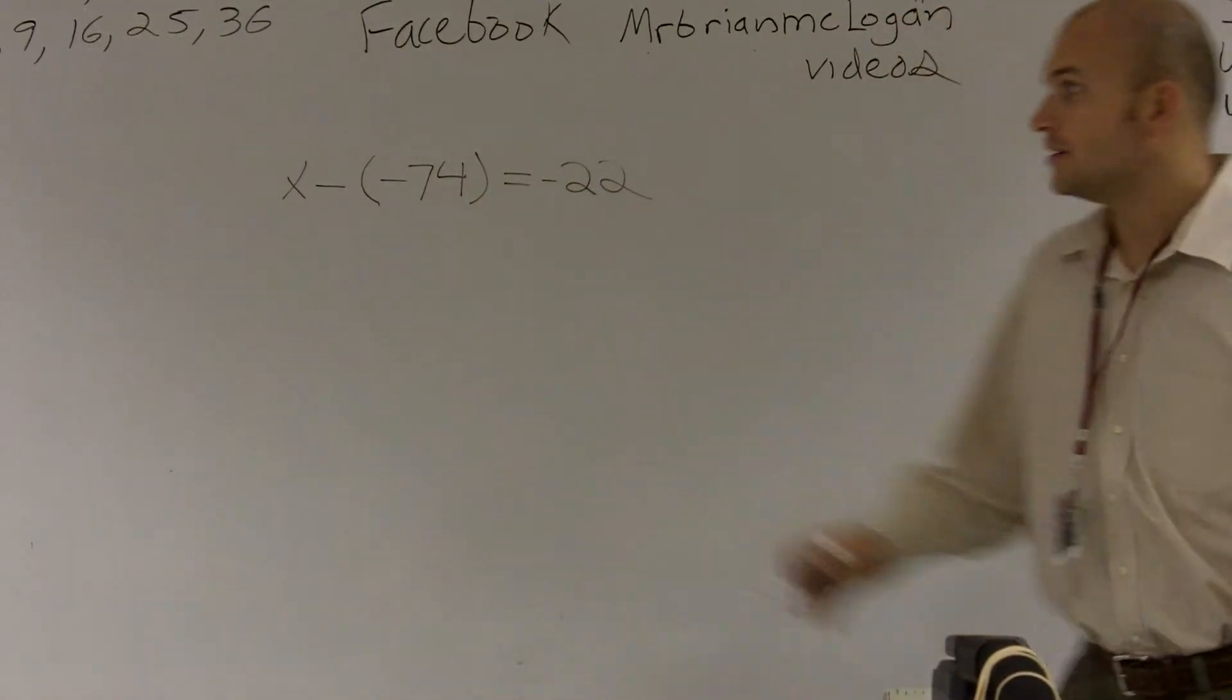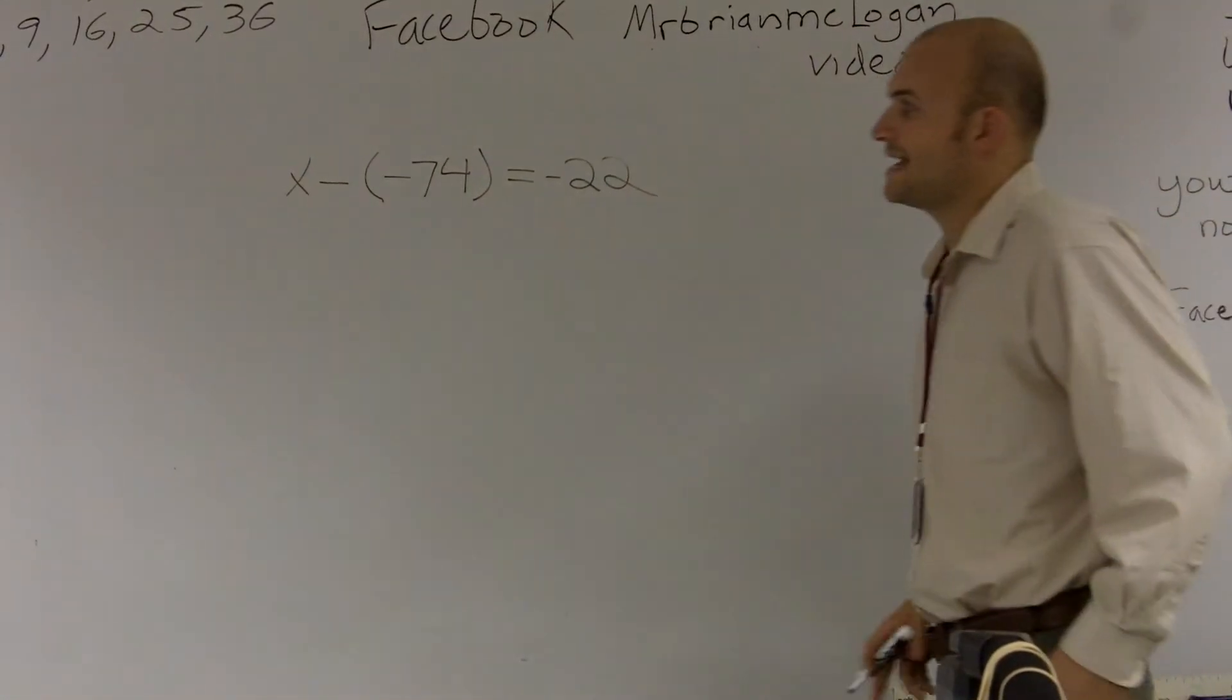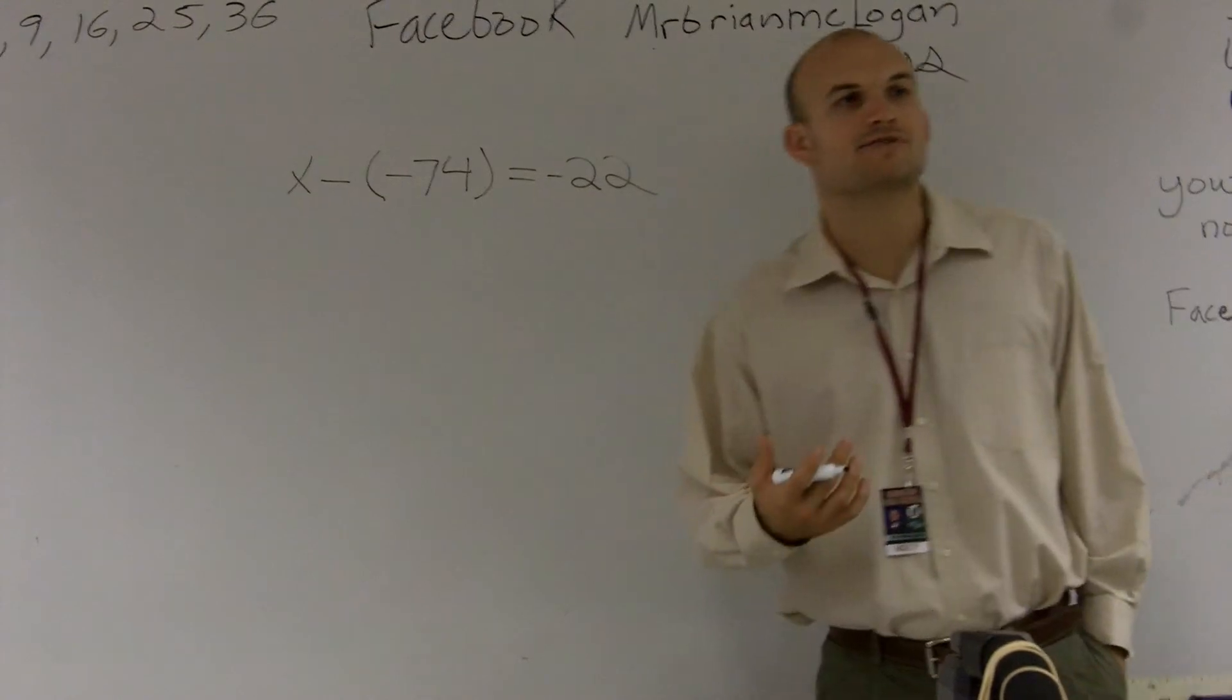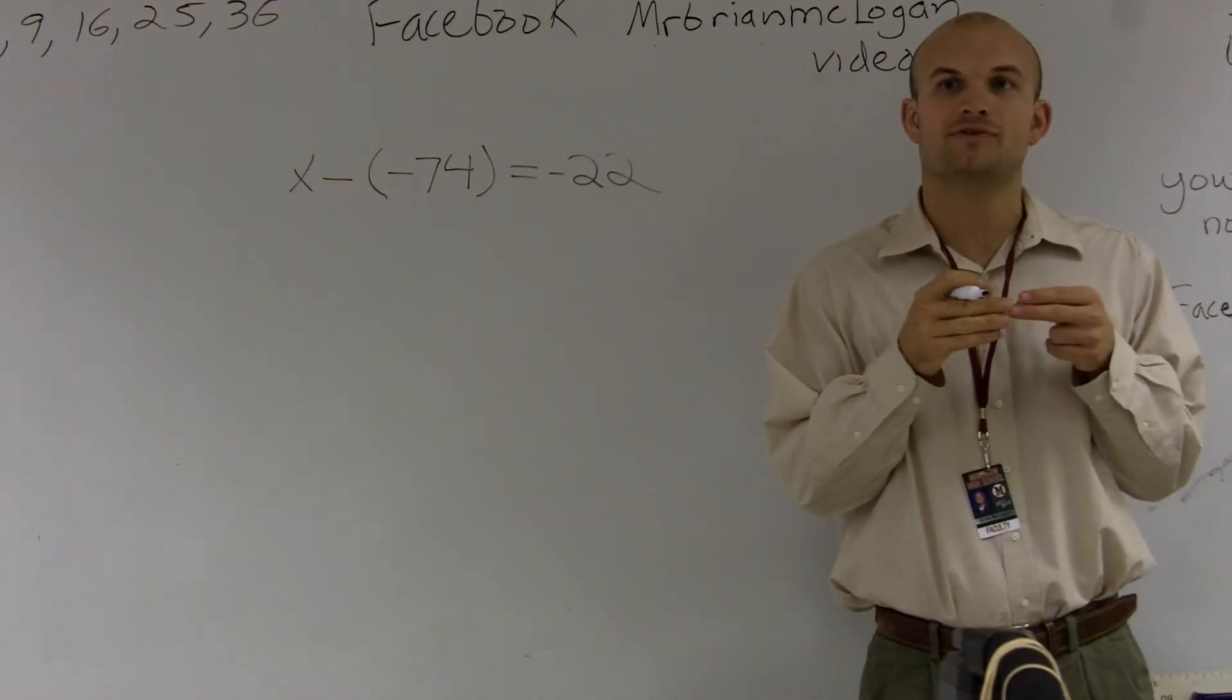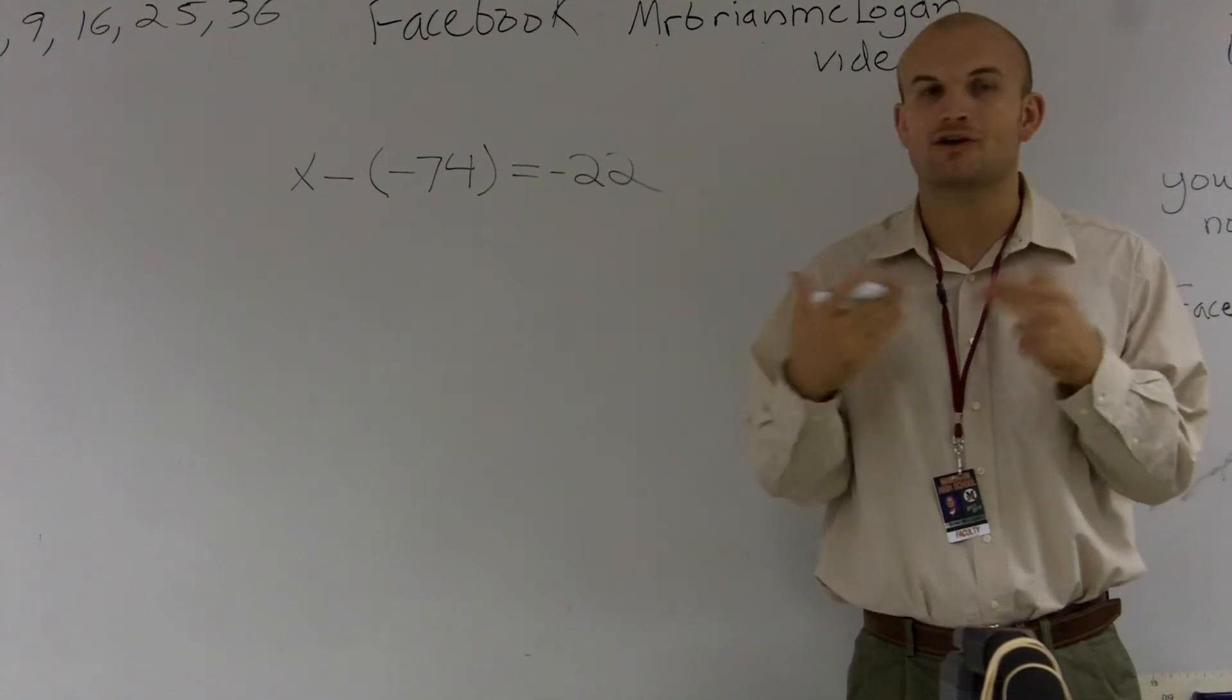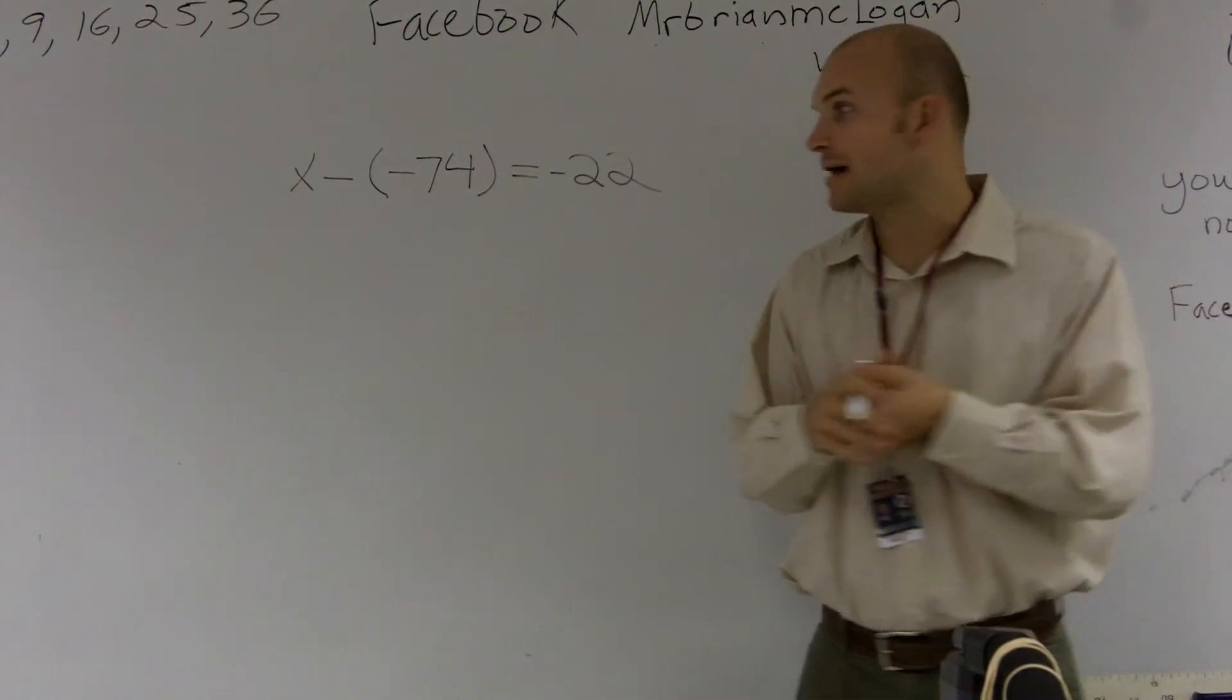On a problem like this, we have x minus a negative 74. One thing I want you guys to remember is whenever we have two negative signs next to each other, they're kind of canceling each other out. And what we can do is we can actually rewrite the problem.